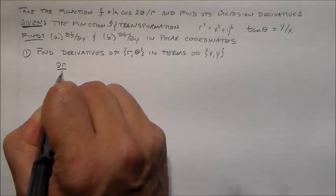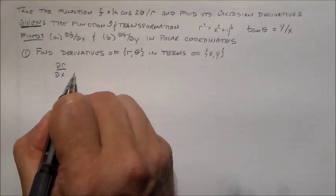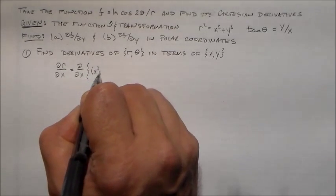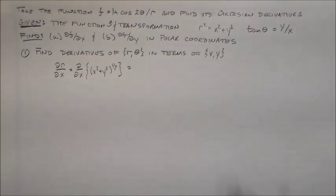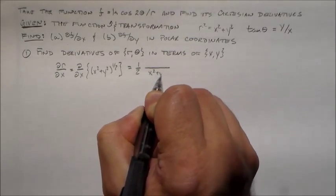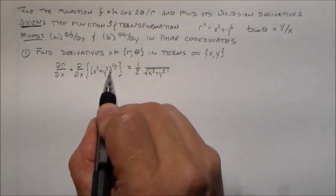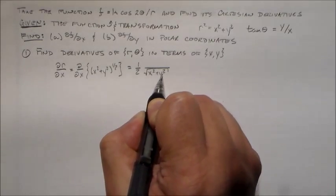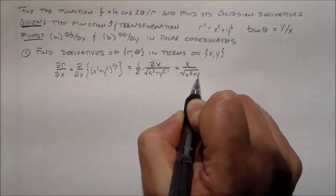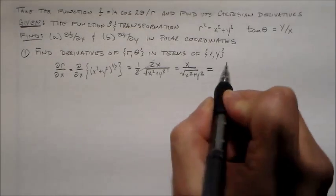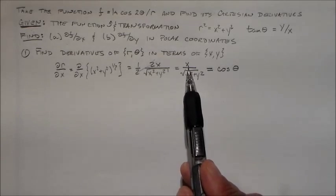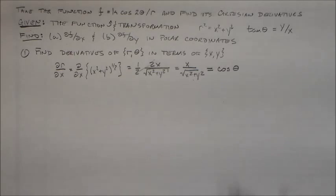So now we're going to do ∂R/∂x. That's equal to ∂/∂x of (x² + y²)^(1/2). Treating y as a constant, we end up with one half times 2x over the square root of x² + y², which equals x over √(x² + y²). And I want to put this back into the original coordinates - x over r is cos θ. So ∂R/∂x = cos θ.